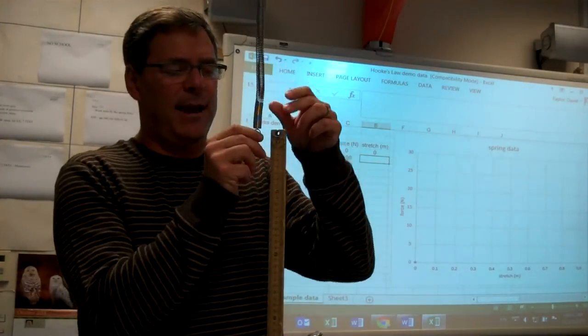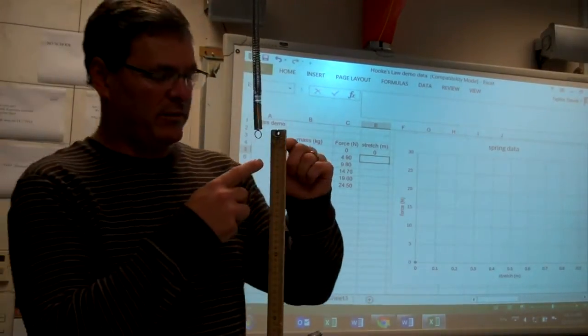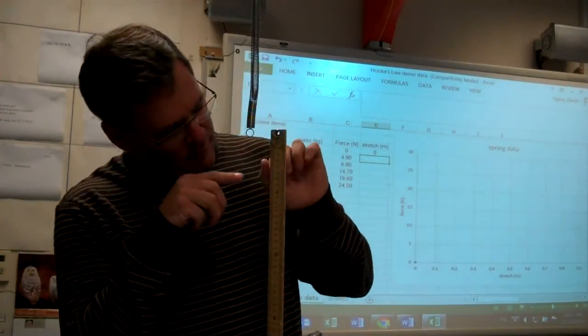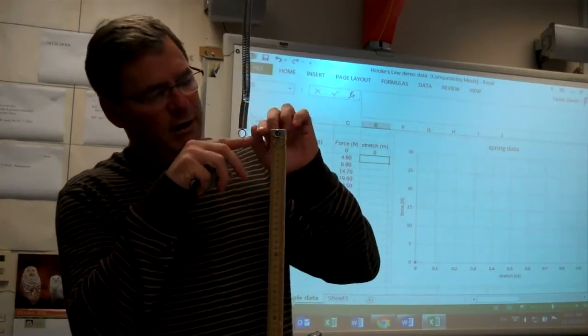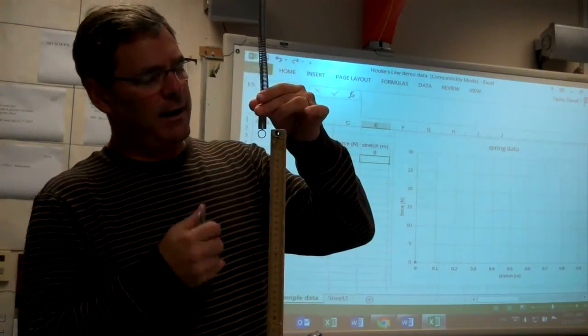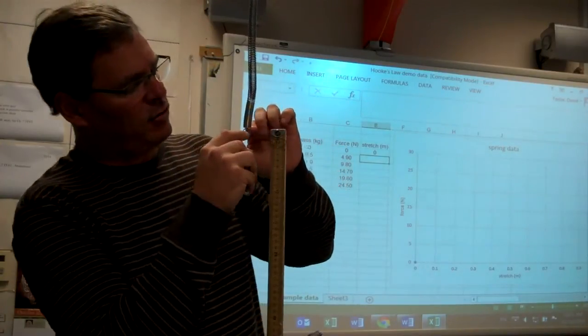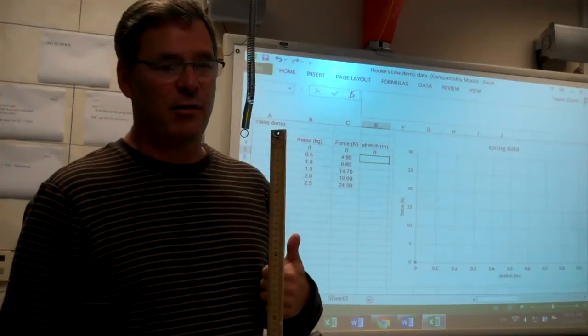So what I'm going to do is hang some weights on the spring. And with this meter stick, I'm going to measure by looking at where the spring goes to, how far the spring has stretched. So right now, I've set my meter stick so that the end of the spring is at the zero mark.